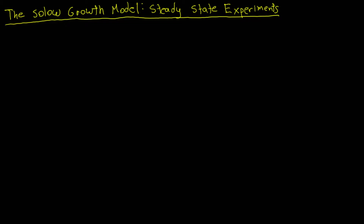To begin this analysis, let's start with some review. In particular, let's start with the equation that defines the law of motion for capital, also known as the capital accumulation equation, written in per capita terms. On the left-hand side, we have the change in capital per capita between period t and t+1, which equals investment minus depreciation. Investment is the savings rate times GDP per capita, where GDP per capita equals the production function in per capita terms, assuming constant returns to scale with alpha between 0 and 1. Depreciation is delta times capital per capita.